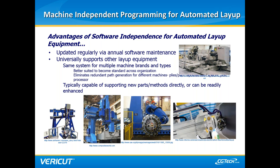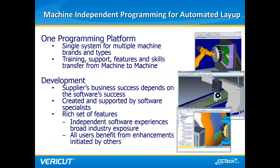Multiple updates including new features are offered several times a year. The software is machine-independent, so for customers with more than one machine brand, all can be controlled and verified through a single-point solution — eliminating the need for training in multiple different softwares. CG Tech prides itself on customer service, having enhanced the software to meet customer needs. When an enhancement benefits one customer but would benefit others, it is bundled with future software releases. On-site and remote training is offered around your schedule, and skills learned for one part and machine transfer easily to others.